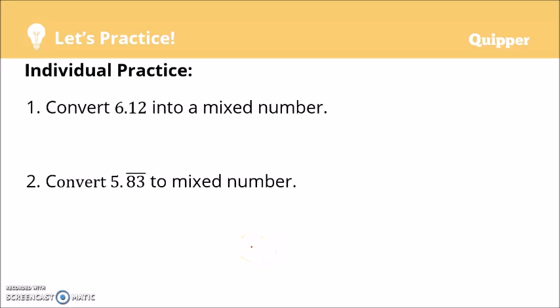I believe you have already solved numbers 1 and 2 in the individual practice. Let's check your answers. This is the answer to number 1: 6.12. This is a terminating decimal, so we can use power of 10 as denominator. Set aside the 6. We have 12 over, since there are two digits, two zeros in the denominator, 12 over 100. The lowest term of 12 over 100 is 3 over 25. So we have 6 and 3 over 25.